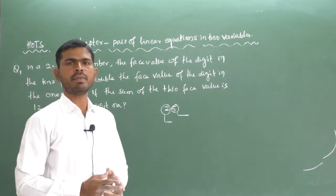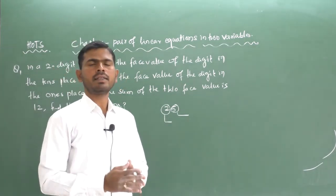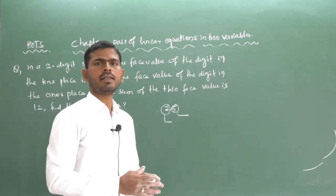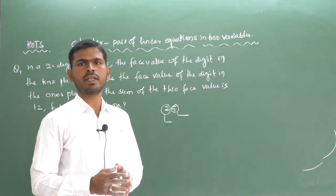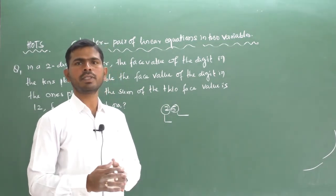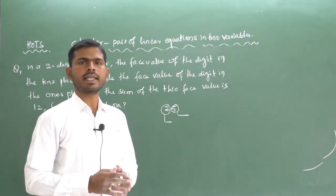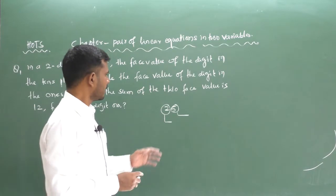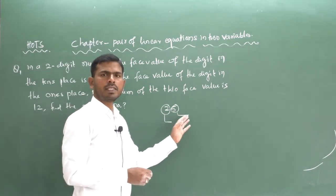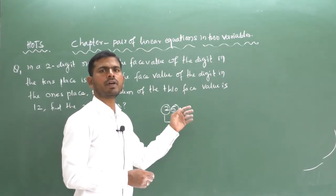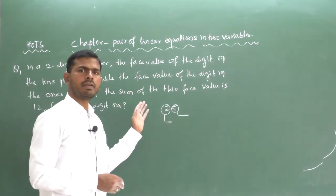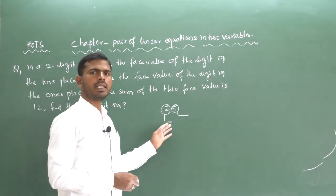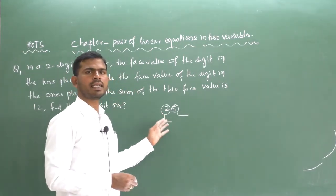So face value remains the same; only the place value changes. What is the difference between face value and place value? Here, 5 is in the units place, so its place value and face value are both 5. For 2, its face value is 2 but its place value is 10 (i.e., 2 × 10).